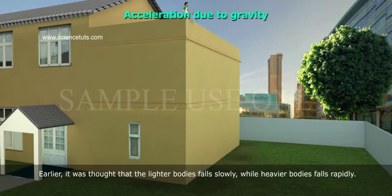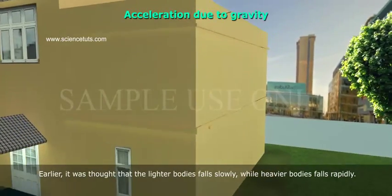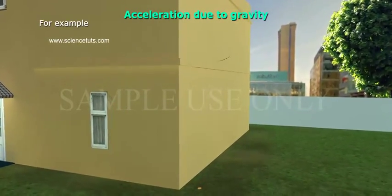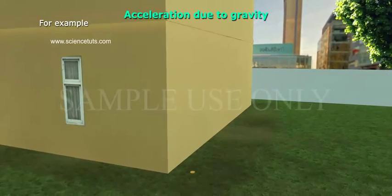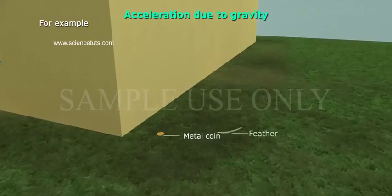Earlier, it was thought that lighter bodies fall slowly while heavier bodies fall rapidly. For example, if a feather and a metal coin are dropped simultaneously from a roof, the metal coin would reach first and the feather later.